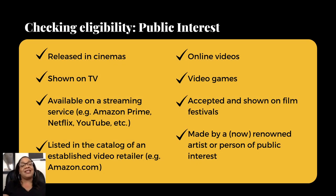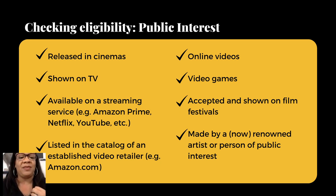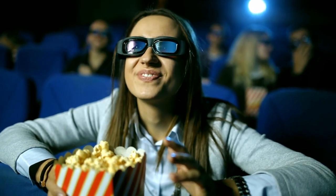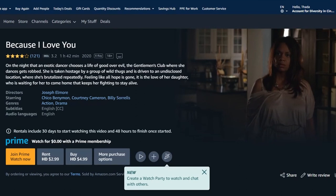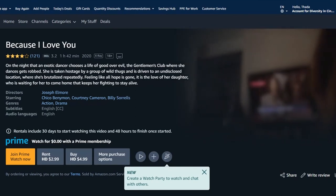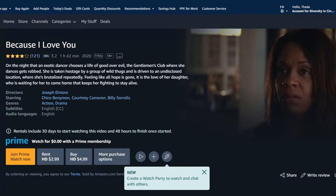Here are the qualifications that would make your film eligible to be put on IMDB: released in cinemas, shown on TV, available on a streaming service like Amazon Prime, Netflix, or YouTube, listed in the catalog of an established video retailer like Amazon, or available as an online video or video game. It has also been accepted and shown at a film festival — and when they mention film festivals, it has to be a recognizable film festival.